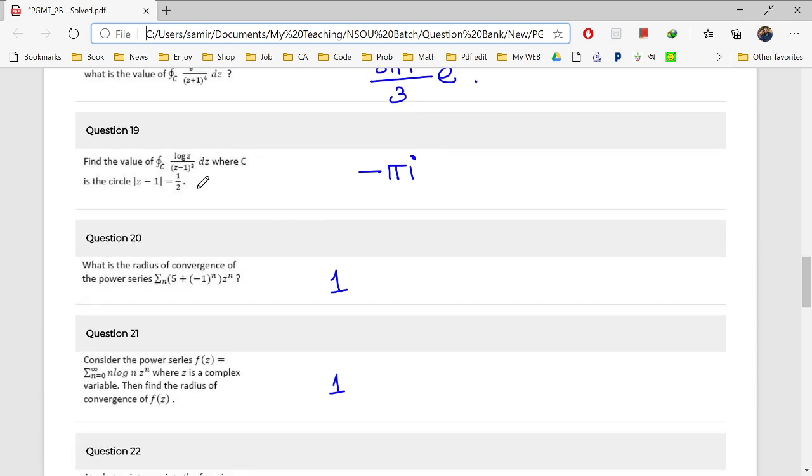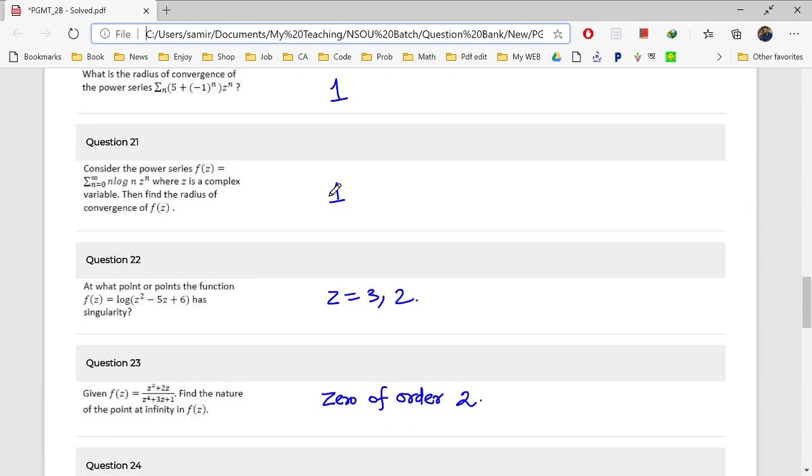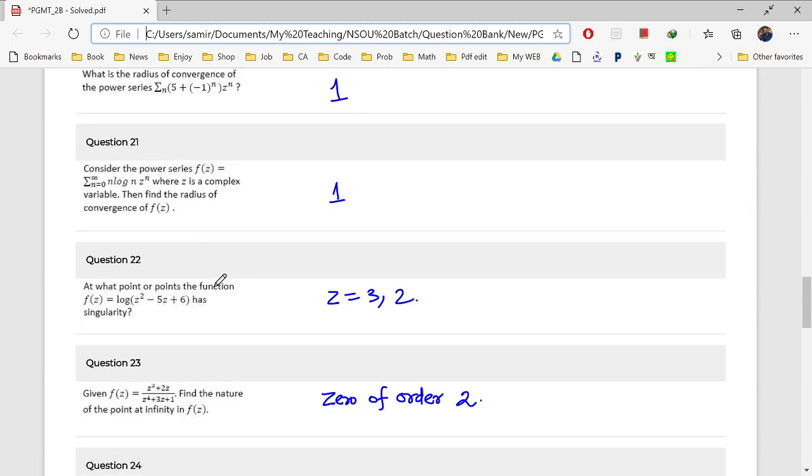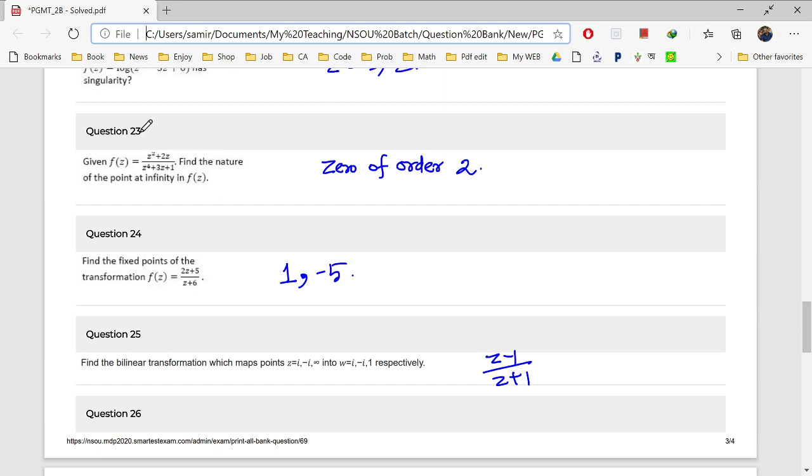Question number 19. Answer is minus pi i. Question number 20. The radius of convergence value 1. Question 21. Radius of convergence 1. Question 22. Whether at origin 0, 3 or 2. Answer is 2.